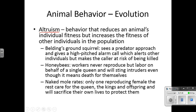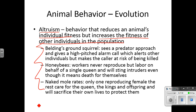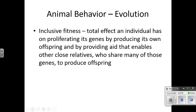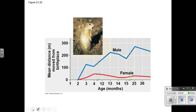Altruism is a behavior that reduces an animal's individual fitness but increases the fitness of other individuals in the population — basically doing something for the greater good. Think about the queen bee as a familiar example. Inclusive fitness is the total effect an individual has on proliferating its genes by producing its own offspring and by providing aid that enables close relatives who share many of those genes to reproduce successfully.